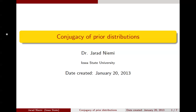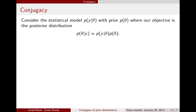Hello, this is Jared Niemey with a mini-lecture on the conjugacy of prior distributions. Recall the objective of Bayesian parameter estimation is to determine the posterior distribution as the product of the likelihood and the prior.